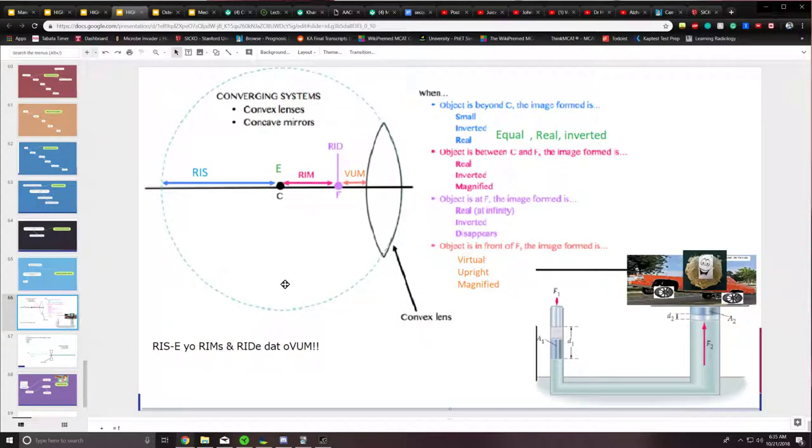Now, the phrase I want you to memorize for converging systems is: rise your rims and ride that ovum. The picture here shows a hydraulic lift lifting rims, and this is a picture of an ovum. This is just a picture to help you associate with the phrase. The phrase is going to be separated into different components as shown here: rise your rims and ride that ovum.